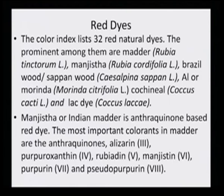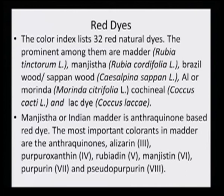Among red dyes, the sources include Morinda citrifolia, cochineal which is Dactylopius coccus, and lac which is Dactylopius lacca. Mungist or Indian madder is an anthraquinone-based red dye. The most important colorants in madder are the anthraquinones: alizarin, purpuroxanthine, rubiadin, mungistine, purpurine, and pseudopurpurine. These all make the color obtained from Indian madder or mungist.